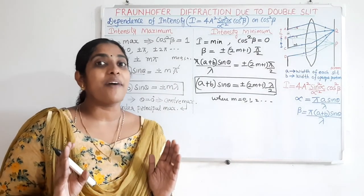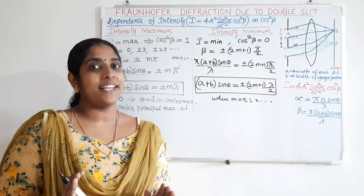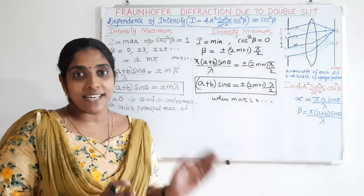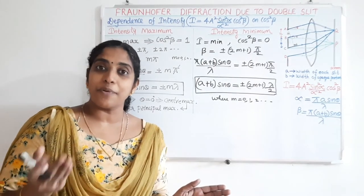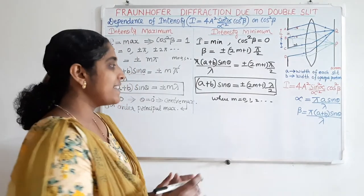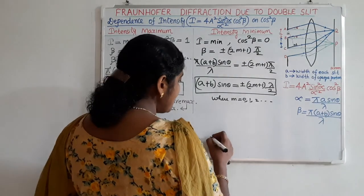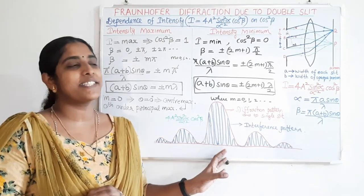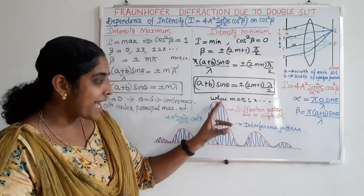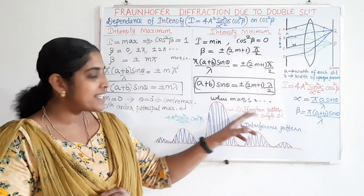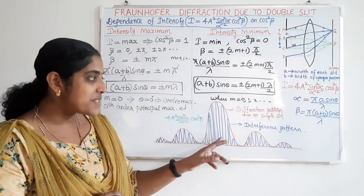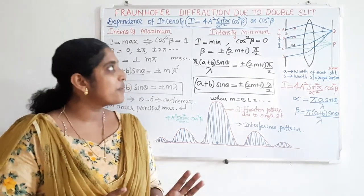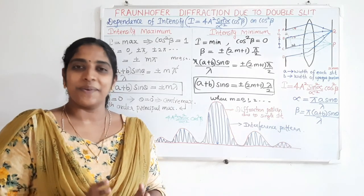The final intensity profile on the screen is the resultant of the intensity profile due to single slit diffraction and the intensity profile due to the double slit interference. The red color shows the diffraction pattern due to single slit, and the blue color shows the interference pattern — the variation of cos²(beta). That is all about diffraction due to double slit. Bye.